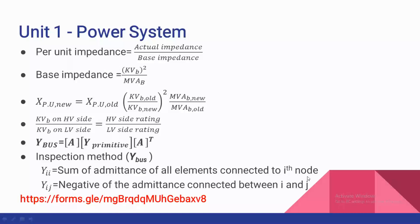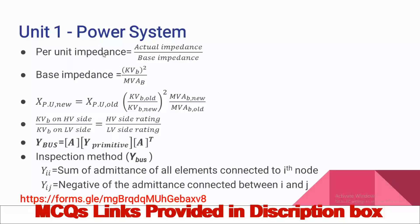Unit One: Introduction. First formula — per unit value. Per unit impedance is equal to actual impedance divided by base impedance. The base impedance formula is kV-base squared divided by MVA-base.